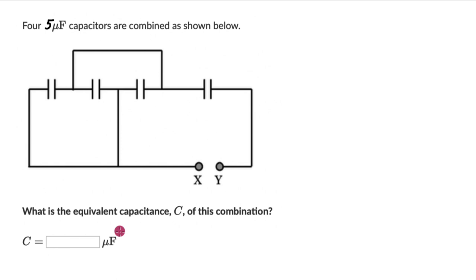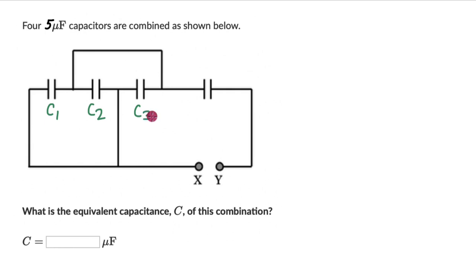Hopefully you have given this a shot. Before we get into figuring out the equivalent capacitance, let's label all the nodes and all the capacitors. So we can call this C1, this is C2, C3, and C4.